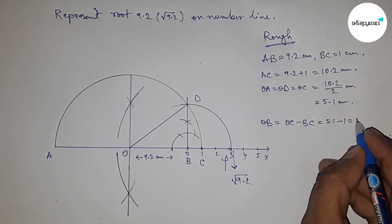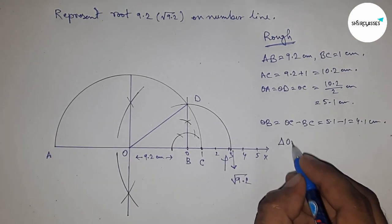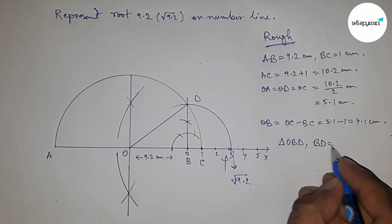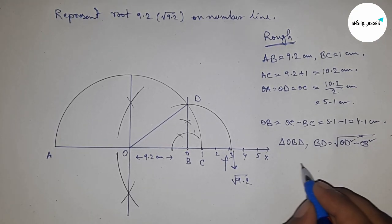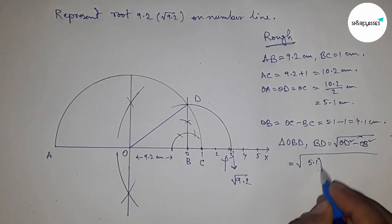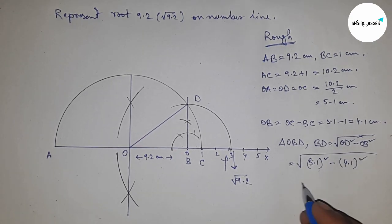OB = OC - BC, so putting the values of OC and BC, this is 4.1 cm. In right angle triangle OBD, BD = √(OD² - OB²), now putting the values of OD and OB.